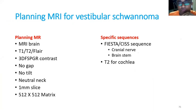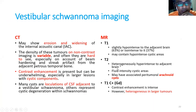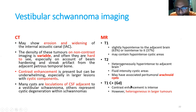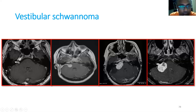For planning vestibular schwannoma, you need the FIESTA sequence or CISS sequence for cranial nerve and brainstem, and cochlea identification. CT is very difficult for identifying the lesion because the intracanalicular part is adjacent to the petrous bone with similar intensity. Therefore, MRI with contrast enhancement is required. As the tumor grows, you can find cystic components and CSF collections (CSF loculation). High-grade or larger tumors will show heterogeneous enhancement.